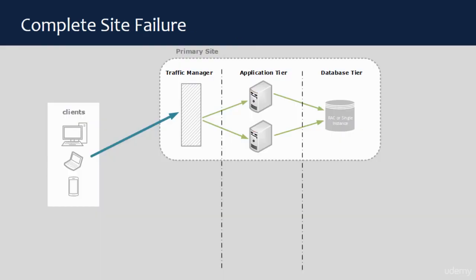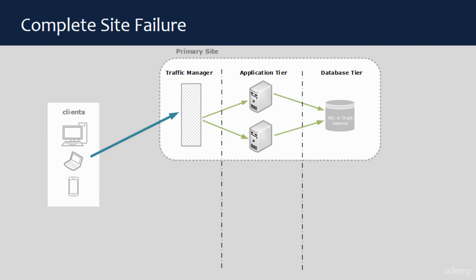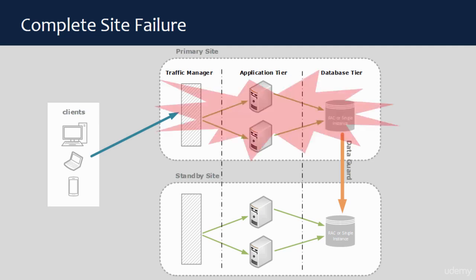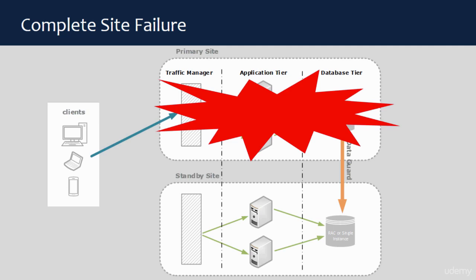For a DR solution against complete site failure, system architects use some kind of a traffic manager. This component controls the connection requests from the clients. In this model, you would have a standby site that is a replica of the primary site — it has the same components and servers but in a different location. The databases are replicated using DataGuard. If the primary site totally becomes unavailable, the traffic manager will automatically redirect the client connections to the new site.